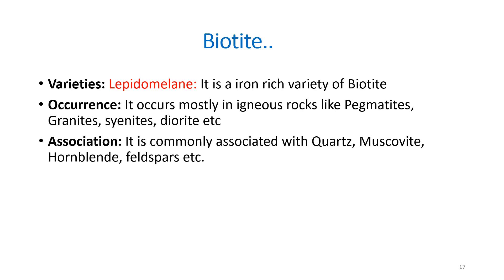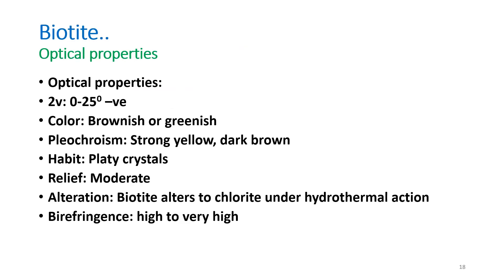A variety of biotite rich in iron is known as lepidomelane. Biotite occurs in igneous rocks like pegmatites, granites, syenites, and diorites, associated with quartz, muscovite, hornblende, and feldspars. Optical properties: 2V = 0 to 25 degrees; optically negative; brownish or greenish color; shows strong pleochroism (yellow to dark brown). It exhibits platy crystals, moderate relief, and alters to chlorite in the presence of water. Birefringence is high to very high.